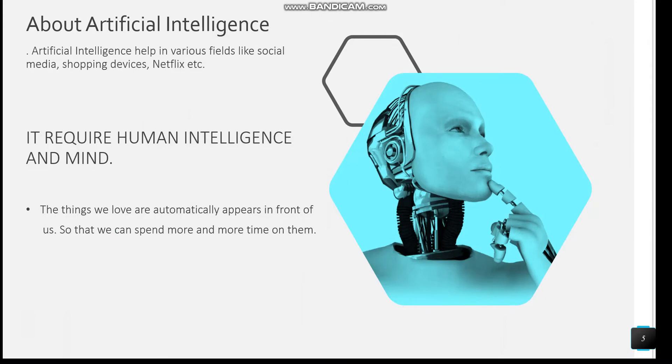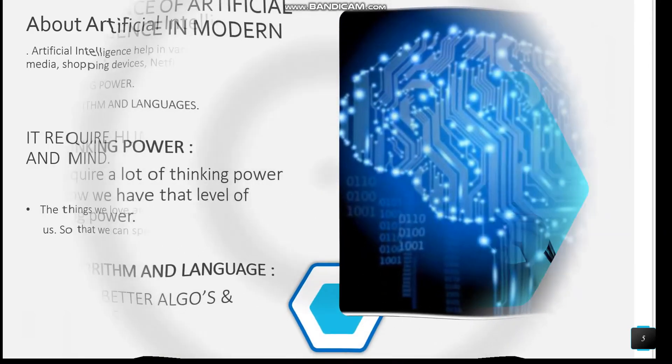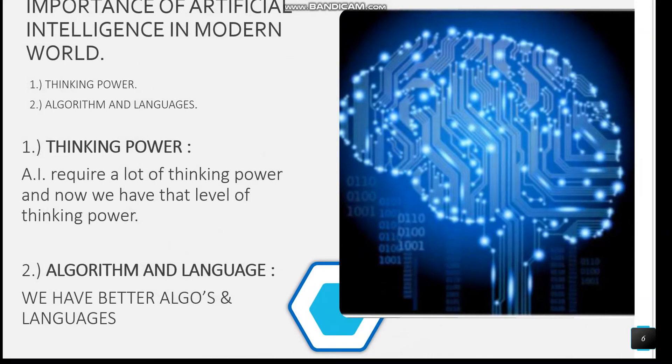The second thing is algorithms and languages. Now we have better and effective algorithms and various languages such as Python, Java, C++, etc. These are all reasons behind the importance of artificial intelligence.